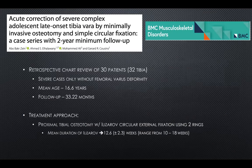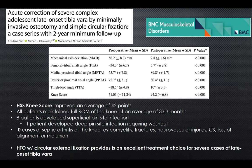A second study used the HSS Knee Score — a patient-reported outcome measure — and found statistically significant improvement. Patients improved on average 42 points, going from 51 to 94.2 on the scale. In terms of complications, more patients in this cohort developed superficial pin-site infections and one patient developed a deep infection requiring washout. No septic arthritis, osteomyelitis, fractures, neurovascular injuries, compartment syndrome, or loss of alignment occurred. Follow-up was approximately 33 months.